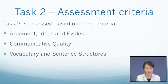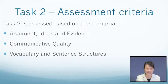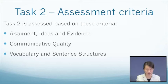Task 2 is assessed based on these criteria. Number 1, argument, ideas and evidence — you can ask yourself: are the ideas and evidence relevant to the topic? Are the ideas presented coherently and clearly? Number 2, communicative quality — it is about whether you have communicated your ideas with some degree of fluency. And lastly, vocabulary and sentence structure — you have to vary your sentence structure and vocabulary in order to score a higher band.